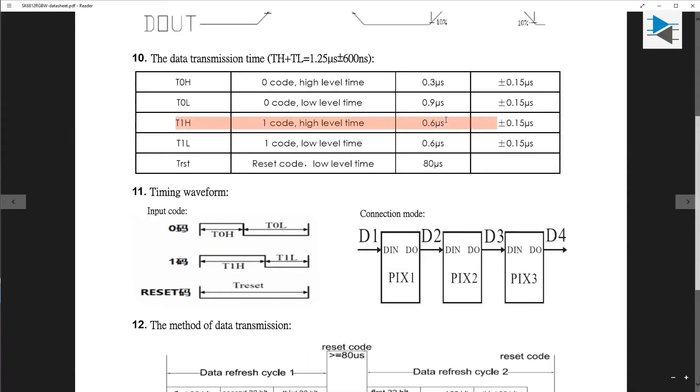According to the table, the high and low time for a digital one is 0.6 microseconds, which is the equivalent of a PWM signal with 50% duty cycle.